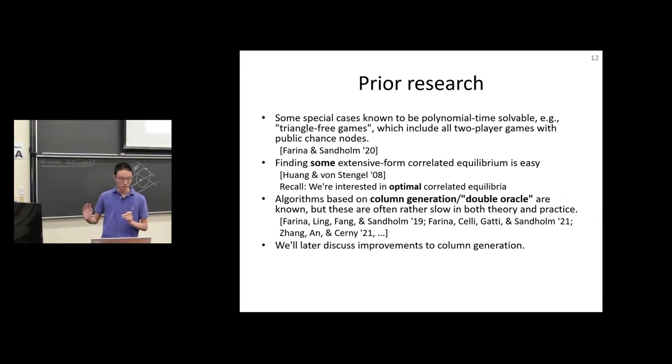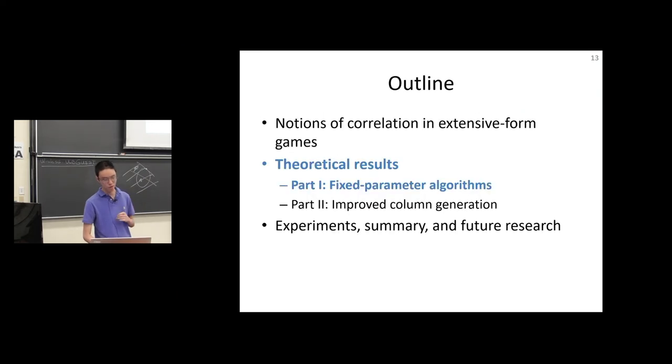We are not the first to study this problem. Some special cases are known to be solvable in polynomial time, including so-called triangle-free games. This is due to work by Gabriele Farina and Tuomas Sandholm. Finding one extensive form correlated equilibrium is easy. This is due to Huang and von Stengel, and is also possible by learning dynamics. There are algorithms based on column generation or double oracle that are known, but these are often slow, both in theory and practice. We'll discuss improvements to column generation. But for now, let's talk about fixed parameter algorithms.